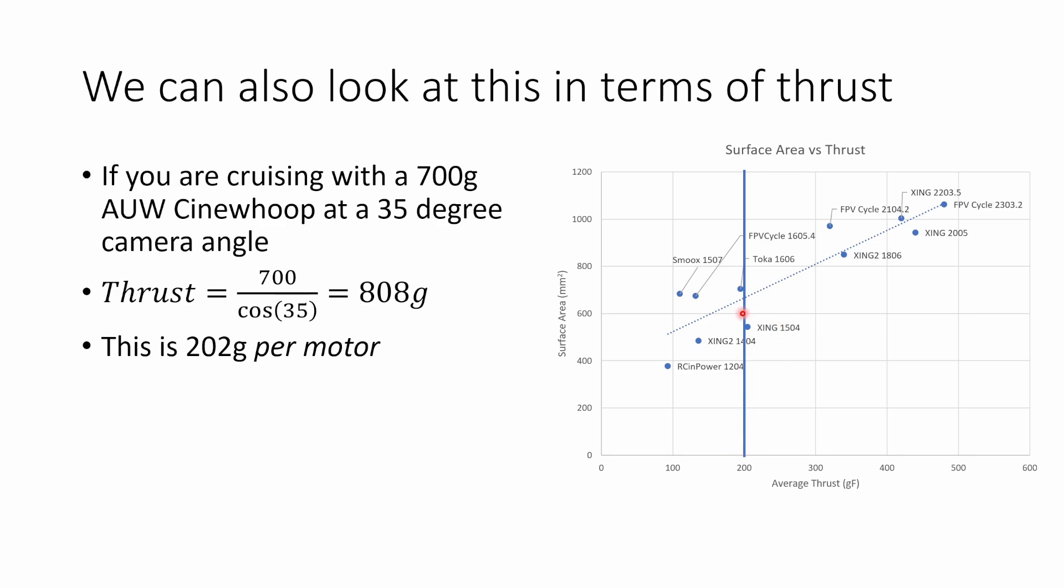So we can see that now this 1504 motor is right on the borderline of being acceptable and maybe we wouldn't want to use it. We want to move to something a bit larger, like a 2104 or an 1806 size or even a 2005. Again, these very flat motors, the 2203 and the 2303, have other drawbacks, so we're going to talk about that now. But you can see that we can choose a motor based on its surface area for the amount of thrust that we need that motor to deliver.